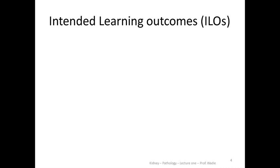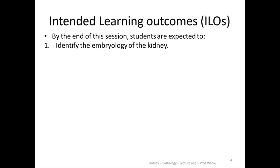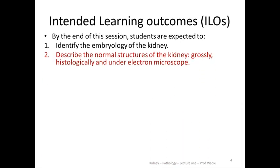What are the intended learning outcomes? By the end of this session, I expect you to: number one — identify the embryology of the kidney, to tell me what is the source of the kidney and where it comes from. Number two — describe the normal structures of the kidney: what are they grossly, histologically, and under the electron microscope. You have to know these three parts: the gross, the histological, and the electron microscopic features.